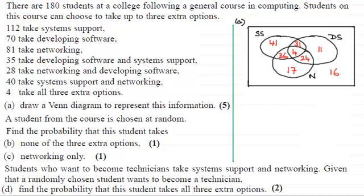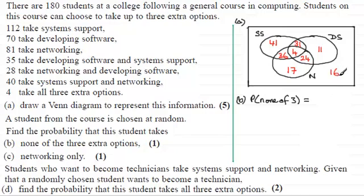Welcome back. For part B, we need to find the probability that none of the students take the three extra options. It's going to be 16 out of the 180 students — 16 out of 180. You should reduce this down: divide top and bottom by 4, and you get 4 out of 45. So 4/45 is that probability.